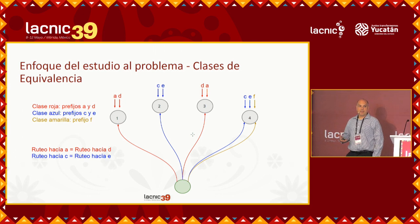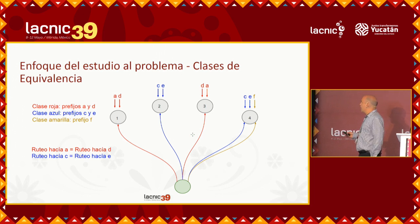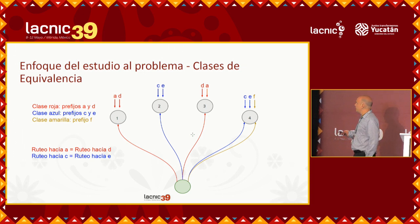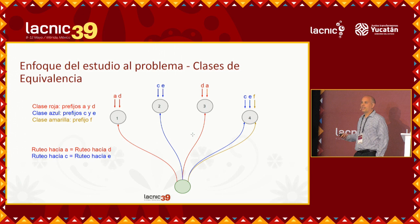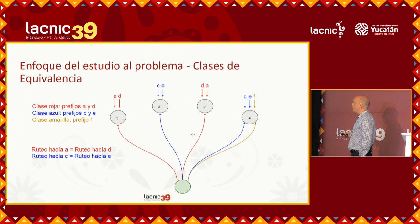An approach to study this complexity and reduce it is to group the routes based on the internal route within our network. In this example, we have routes A and D in red. We can say that these belong to the same class of prefixes because within the network, routing to any of those networks will be the same. That class will be different from the class to which routes C and E belong, which are routed the same way but differently compared to A and D.